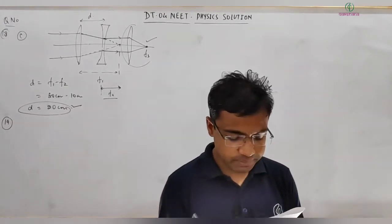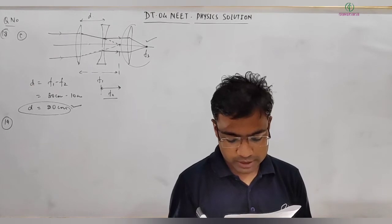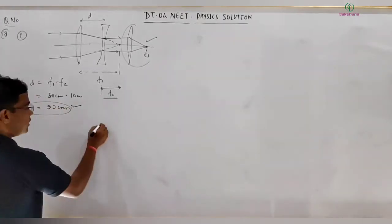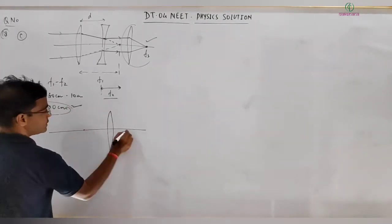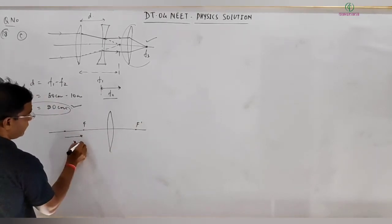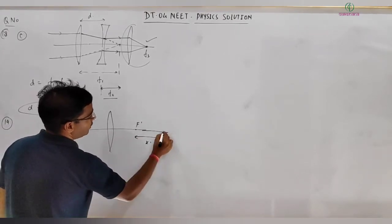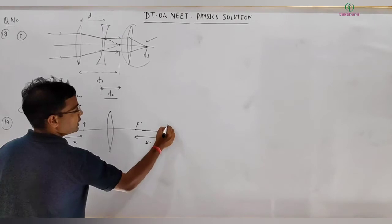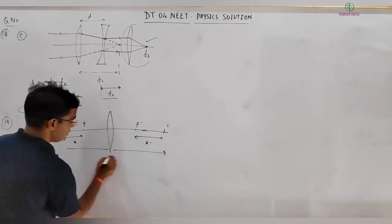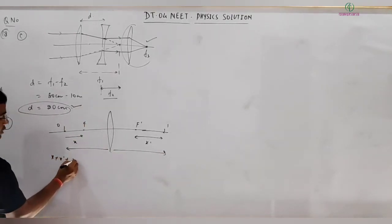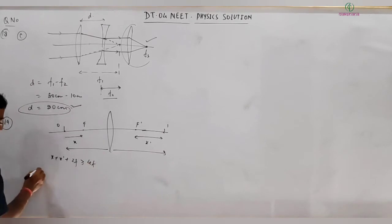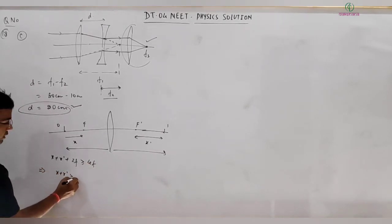Question 19: An object is placed at a distance x beyond the focus of a converging lens, and the image is formed at a distance x′ on the other side. For a real image to be formed, the total object-image distance must satisfy: x + x′ + 2f ≥ 2f, which simplifies to x + x′ ≥ 0. The condition that must be satisfied is x·x′ = f².